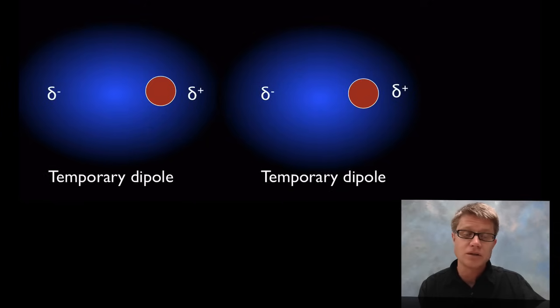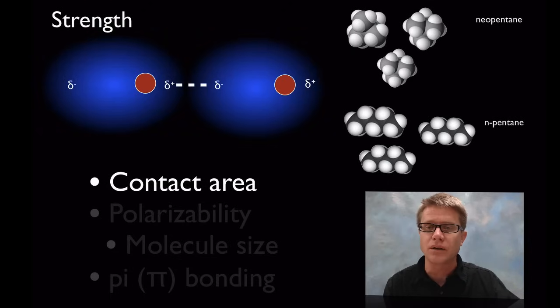And so what this really is creating are two what are called temporary dipoles. They have positive and negative ends. And so a London dispersion force is simply going to be the connection between those two. It's fairly simple. It's going to hold them together. Now it's just instantaneous. It's temporary and then it's going to go away. But if we have enough of these atoms in an area and it's cool enough then we can get that.